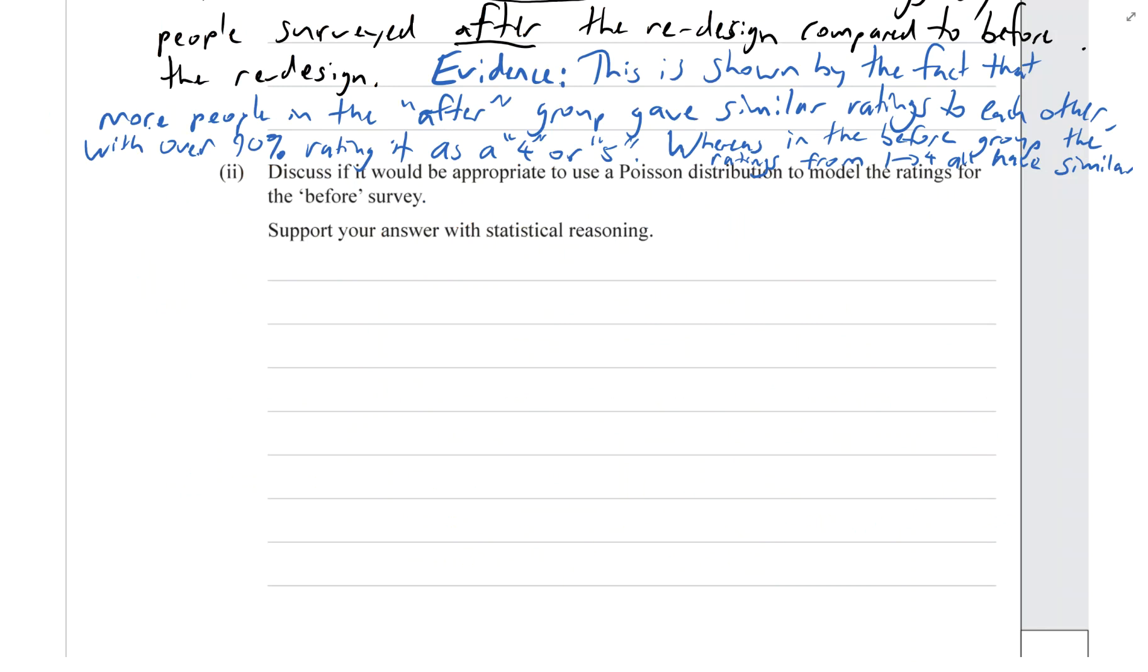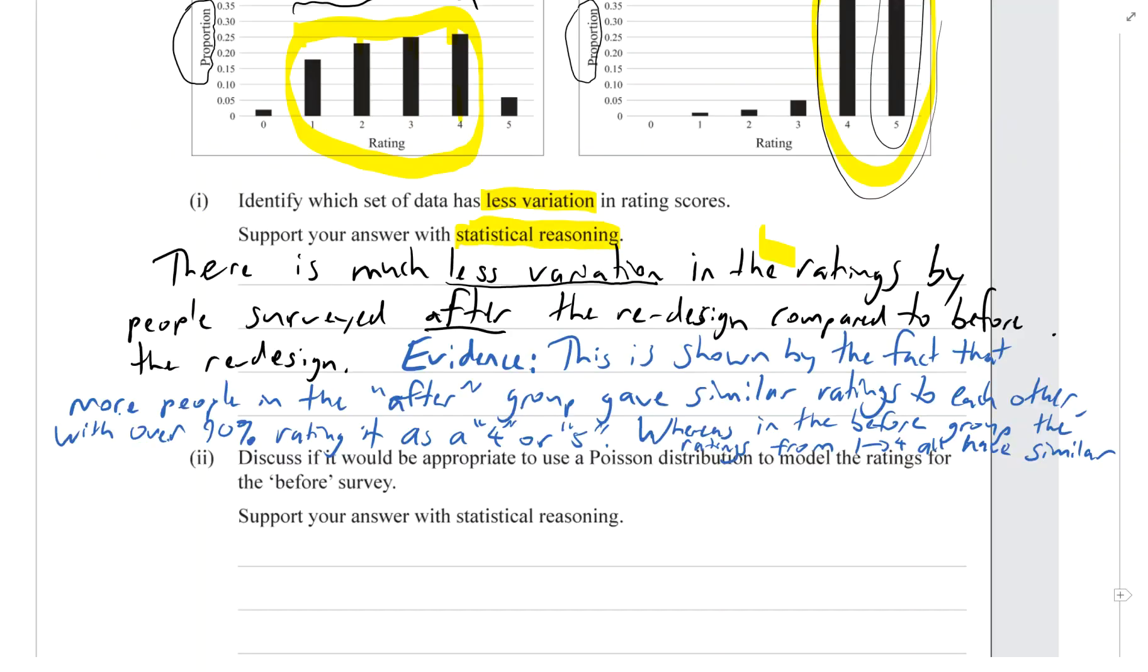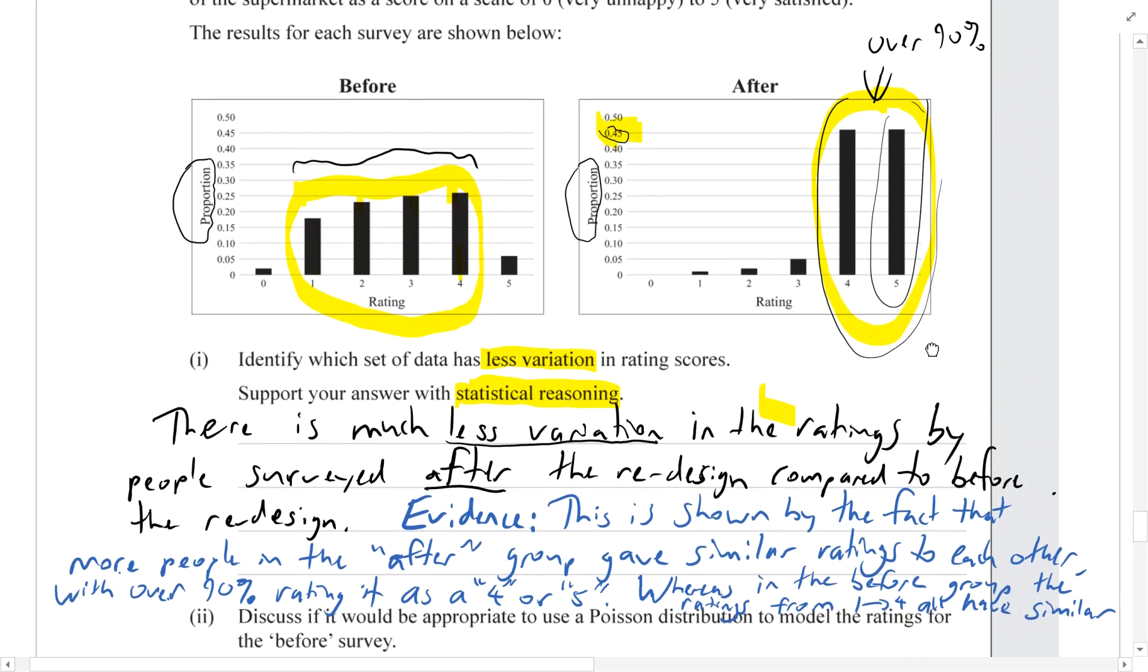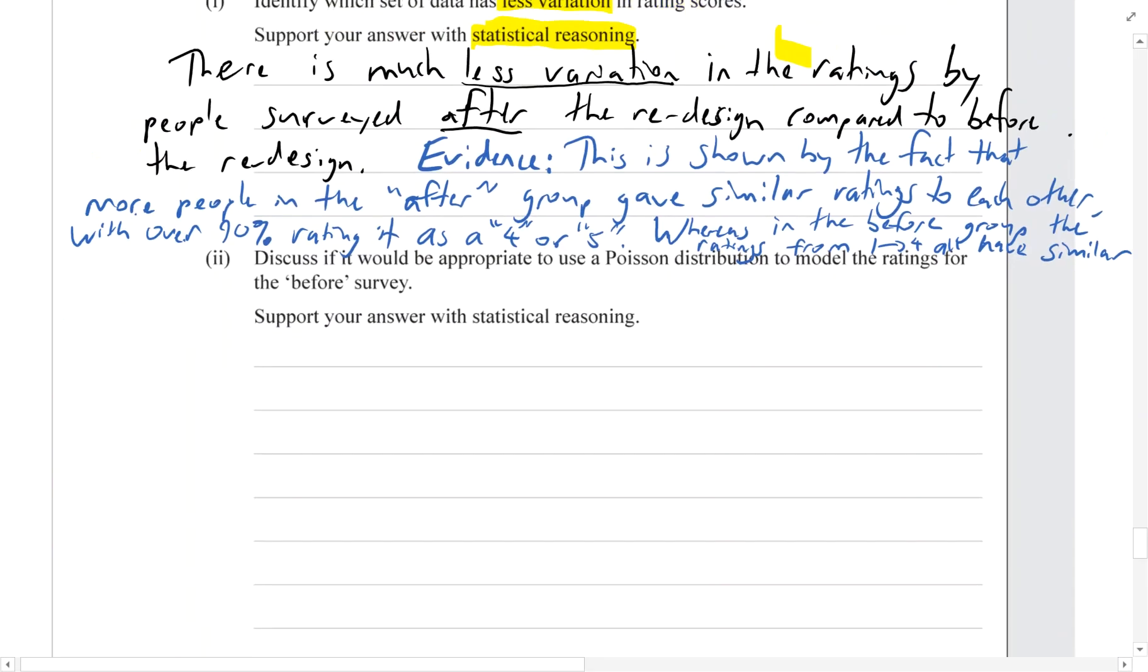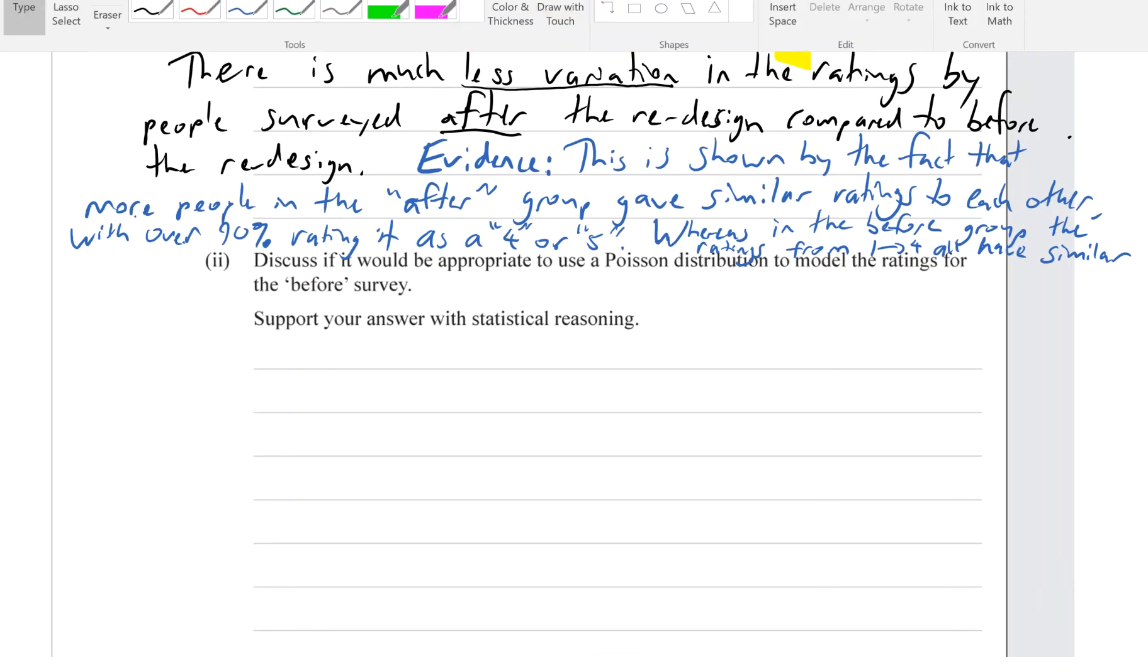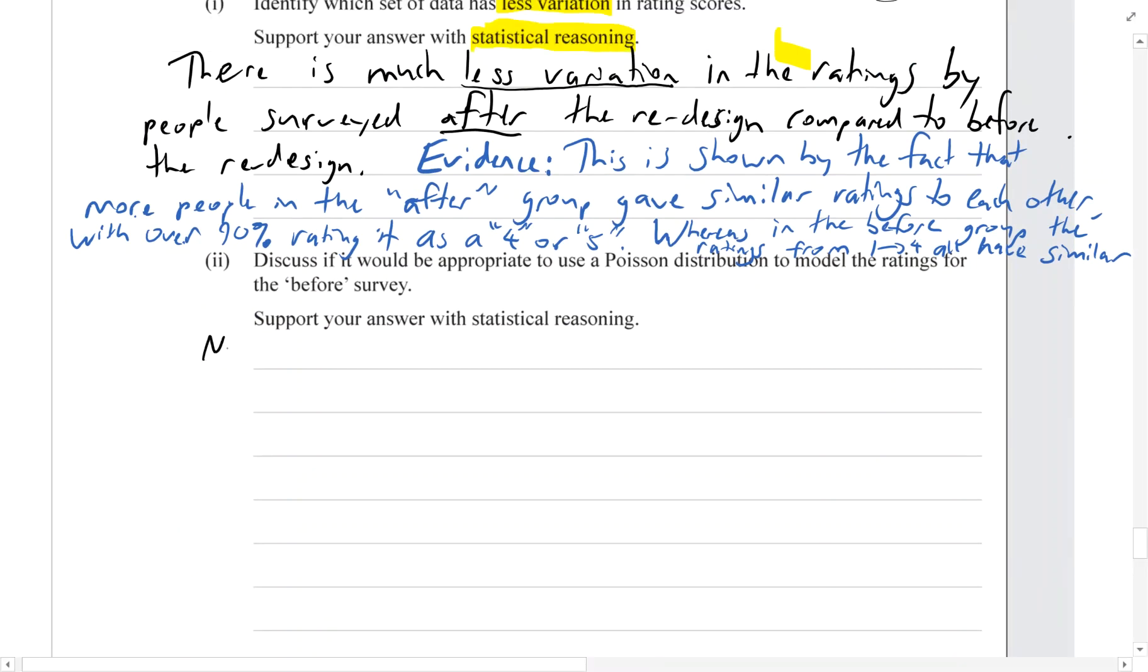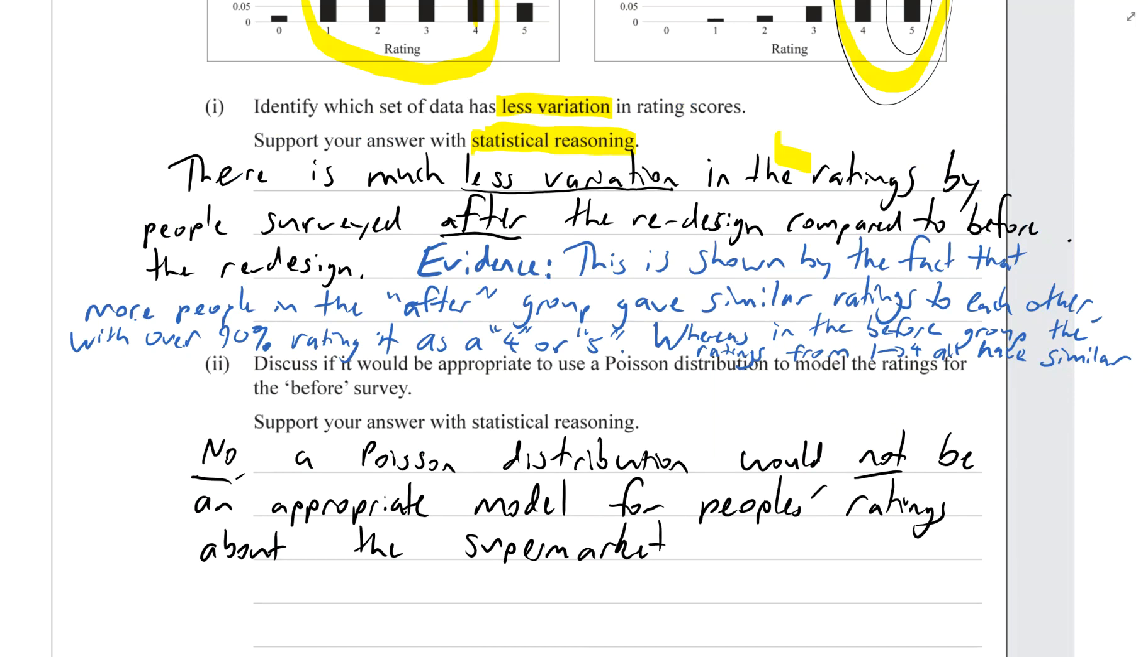So are we dealing with the counting of an event, how many times something happens per interval, when we're talking about these ratings? No, we're not. The ratings are just people's opinions on something, aren't they? So no - always start by stating the obvious - no, Poisson would not be an appropriate model for people's ratings about the supermarket.